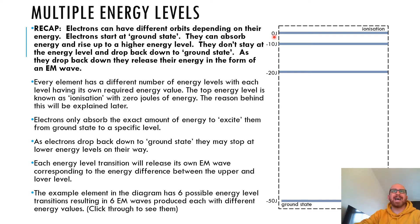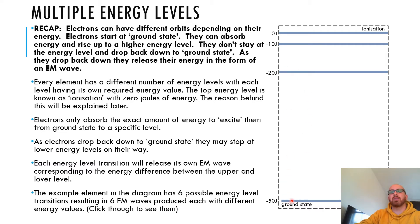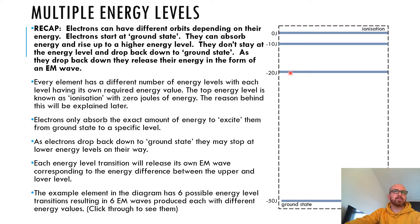Electrons only absorb the exact amount of energy to excite them from ground state to a specific level. So if an electron was going from here to here, it would only absorb the energy difference — say from minus 50 to minus 20 — meaning 30 joules of energy to go between those levels. As the electrons drop back down to ground state, they may stop at lower energy levels on their way. Each energy level transition will release its own EM wave corresponding to the energy difference between the upper and lower level.